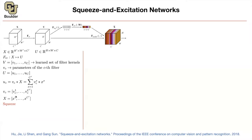The squeeze operation is nothing but global average pooling. It gives you Z, the squeezed vector, which is C-dimensional. For those unfamiliar: you divide by the number of pixels in your image, sum over all pixels, and that gives you a vector in R^C because each term is C-dimensional.